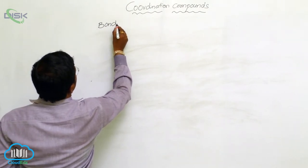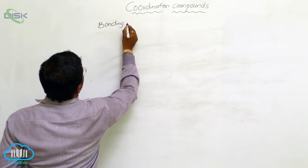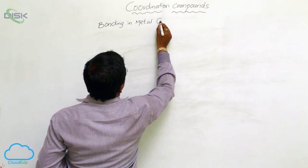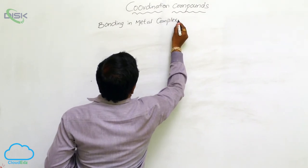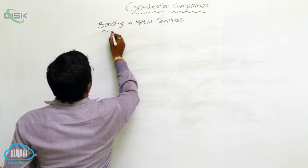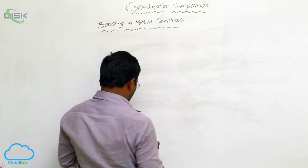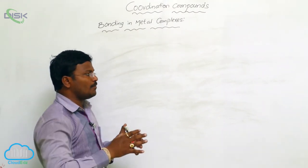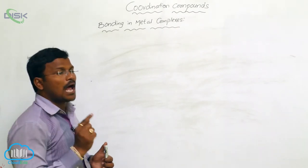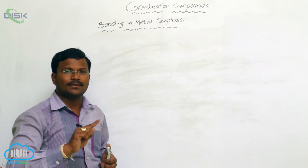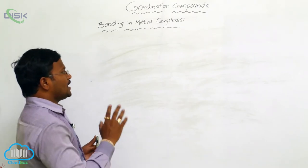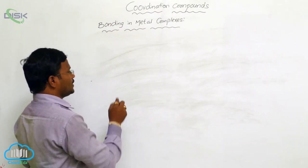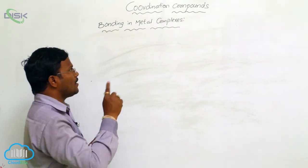Bonding in metal complexes. How metal complexes make a bond to provide coordination covalent or coordination compounds was explained by Alfred Werner in the year 1898. But there are so many statements that felt at fault regarding the explanation of metal complexes bonding by Alfred Werner.